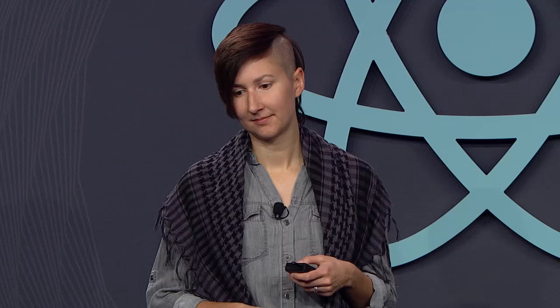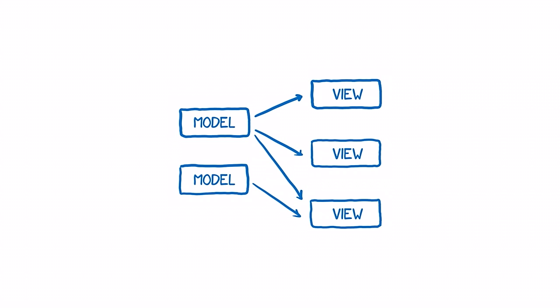When they looked closer, they saw the source of the problems was in the way they were handling data. They had models that held the data. Those models, when a user viewed a page, would push the data out to the views. The views also provided a user interface for users to add more data, so the views had to push that data back up to the models. And sometimes there are dependencies between models, so you have model-to-model communication.